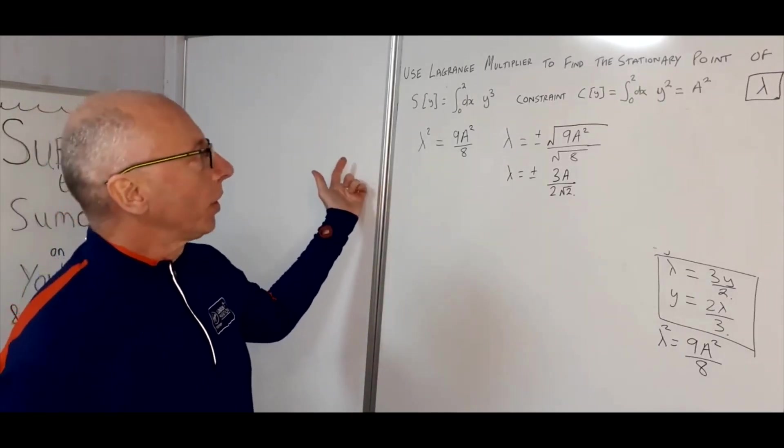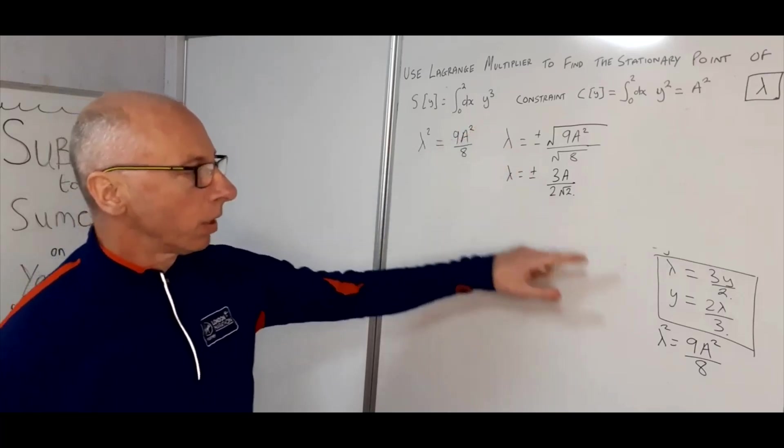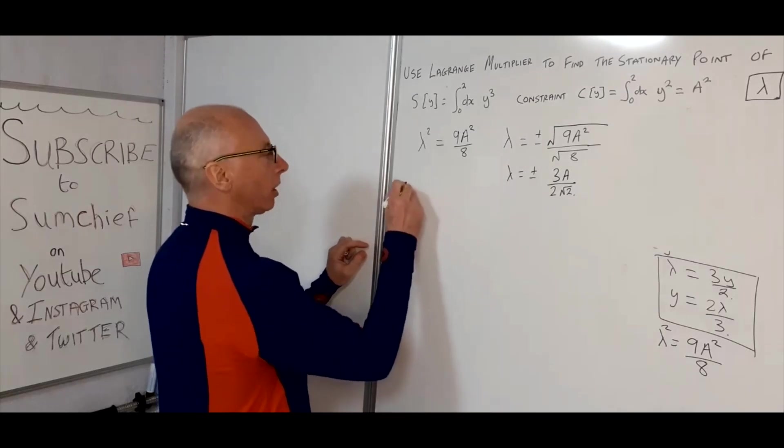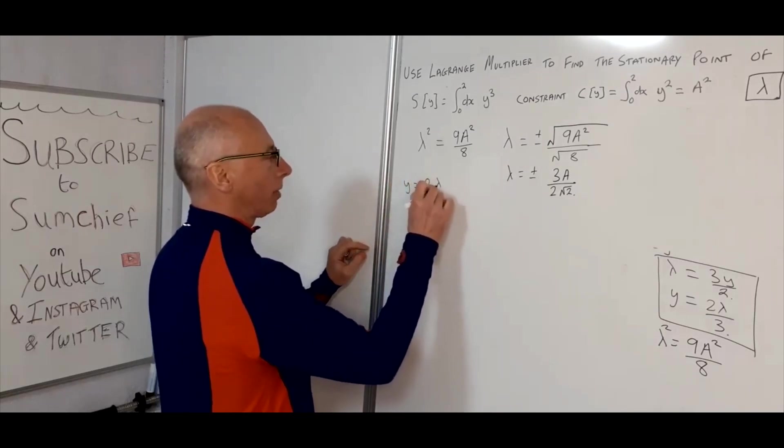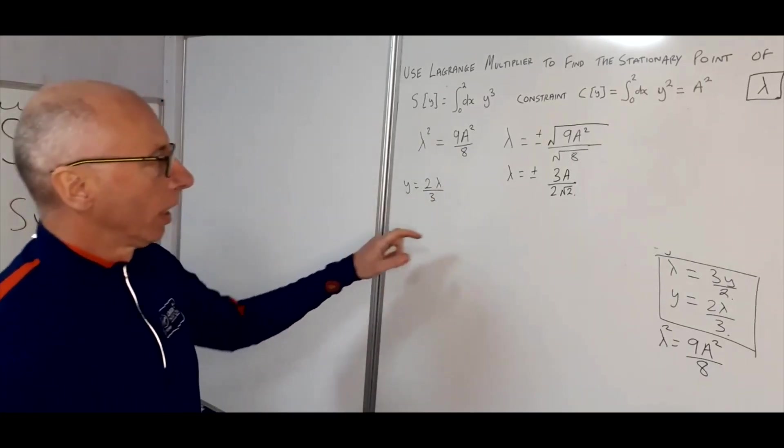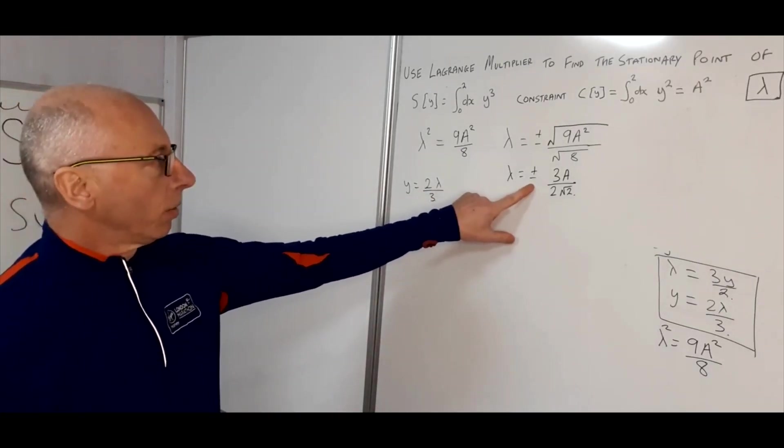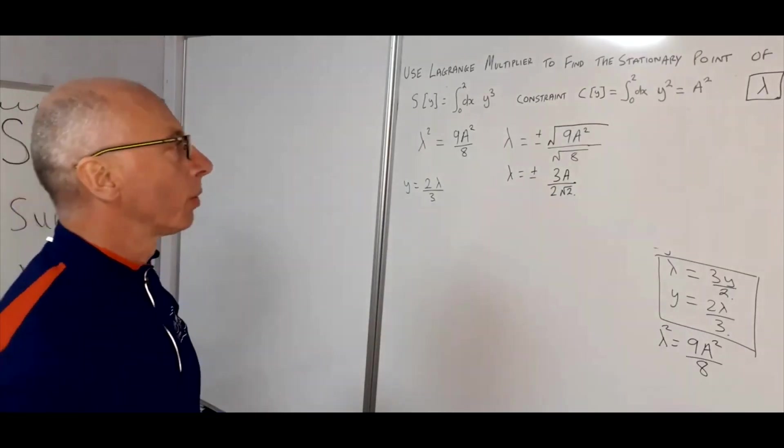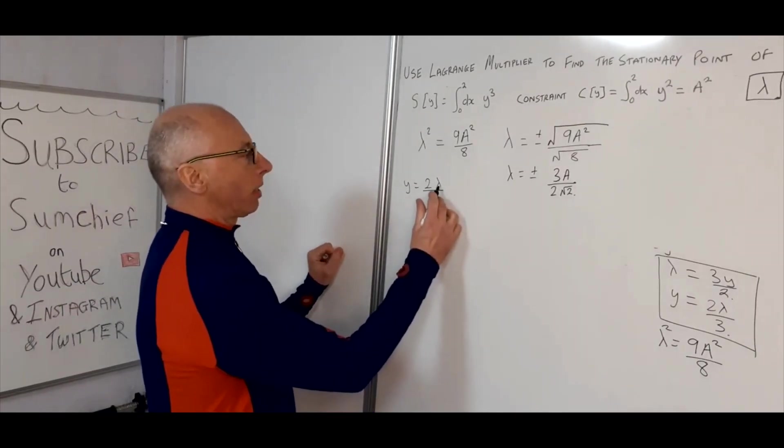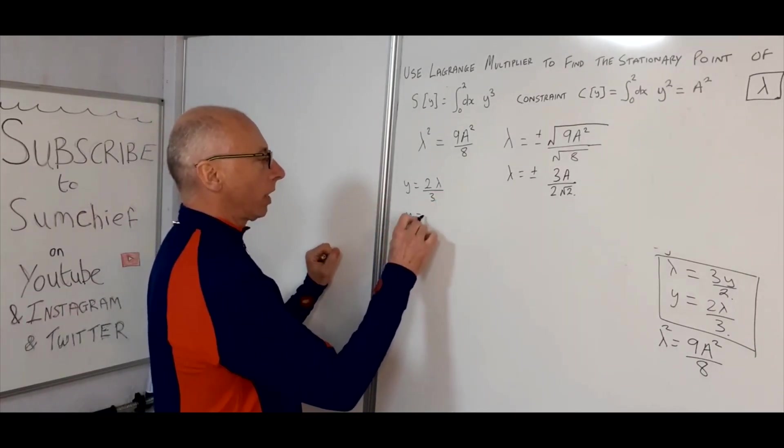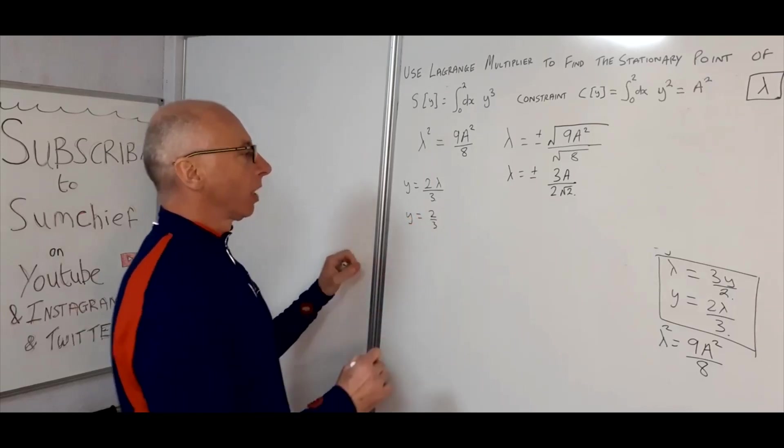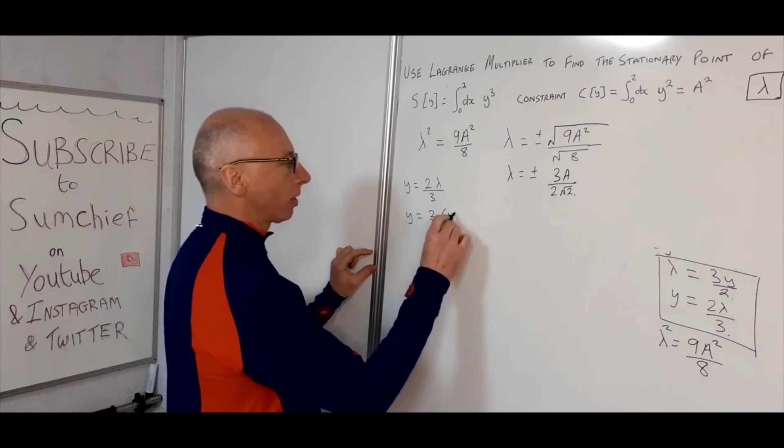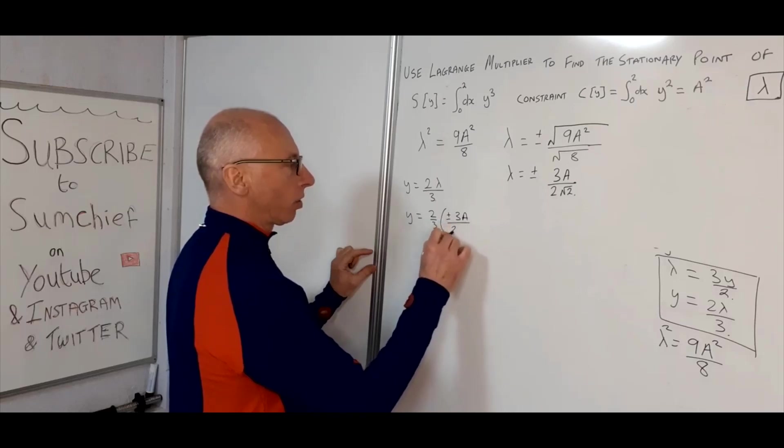So now what we need to do is try and find our function for Y. That's our goal, that's what we're looking for. Now the Euler Lagrange equation gave us Y equals 2 lambda over 3. So Y equals 2 lambda over 3. Now using our constraint this is what we got to here. So we've got two solutions, plus or minus 3A over 2 root 2. So let's just plug our lambda into here and that should give us our Y. So Y equals 2 thirds multiplied by, now we can do these probably both at the same time, plus or minus 3A over 2 root 2.